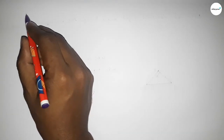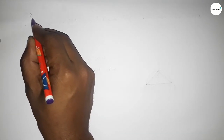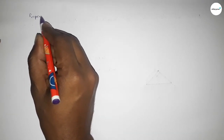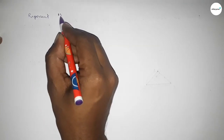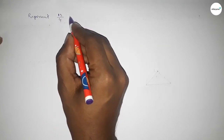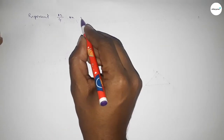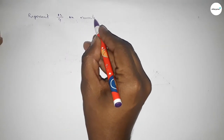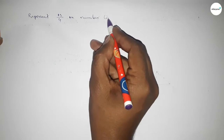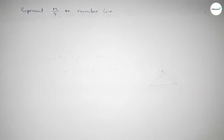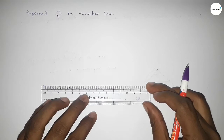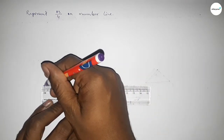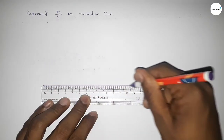Hi everyone, welcome to SI Share Classes. Today in this video we have to represent 13 over 4 on a number line. So let's start the video. First of all, we have to draw the number line.